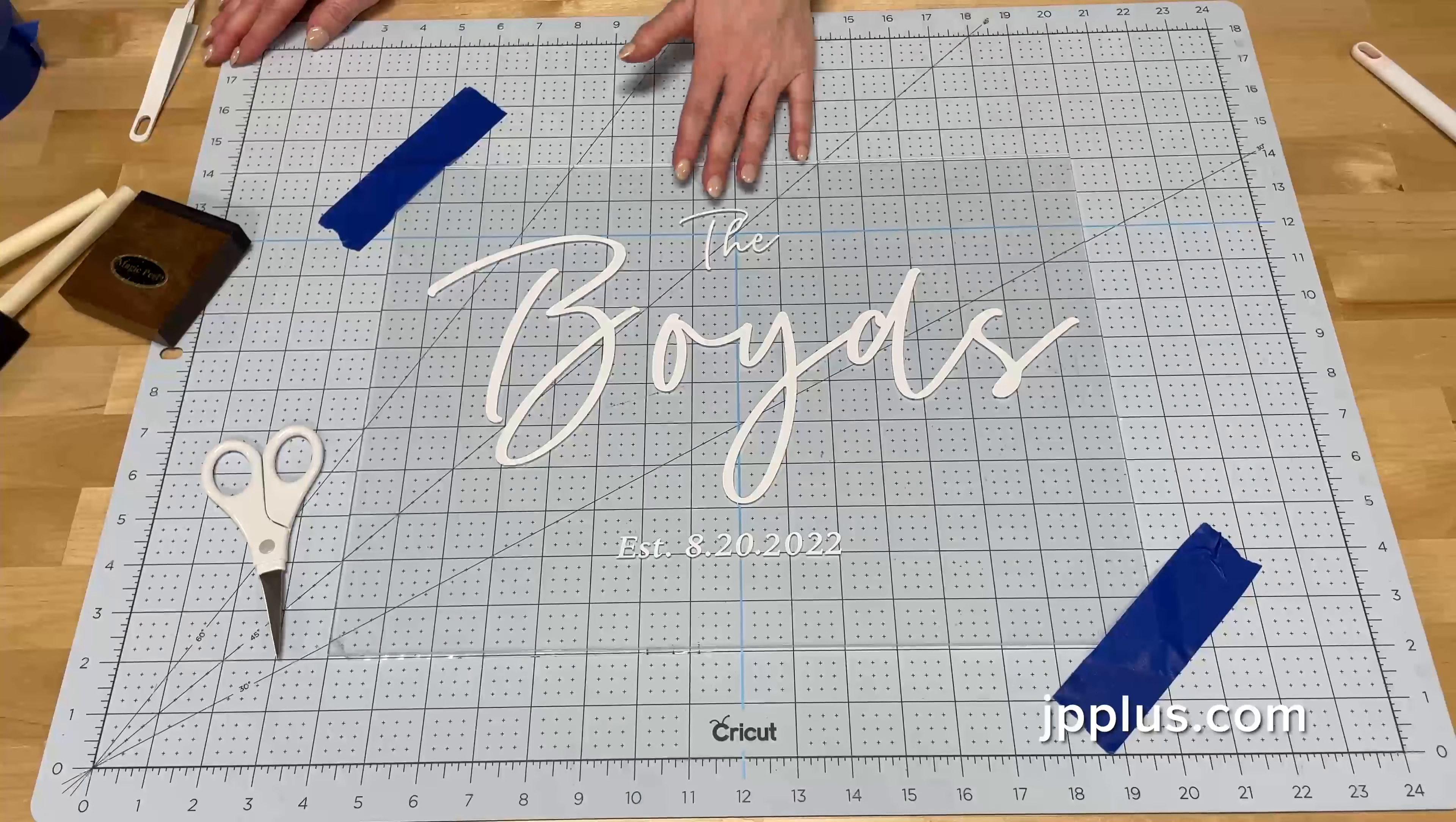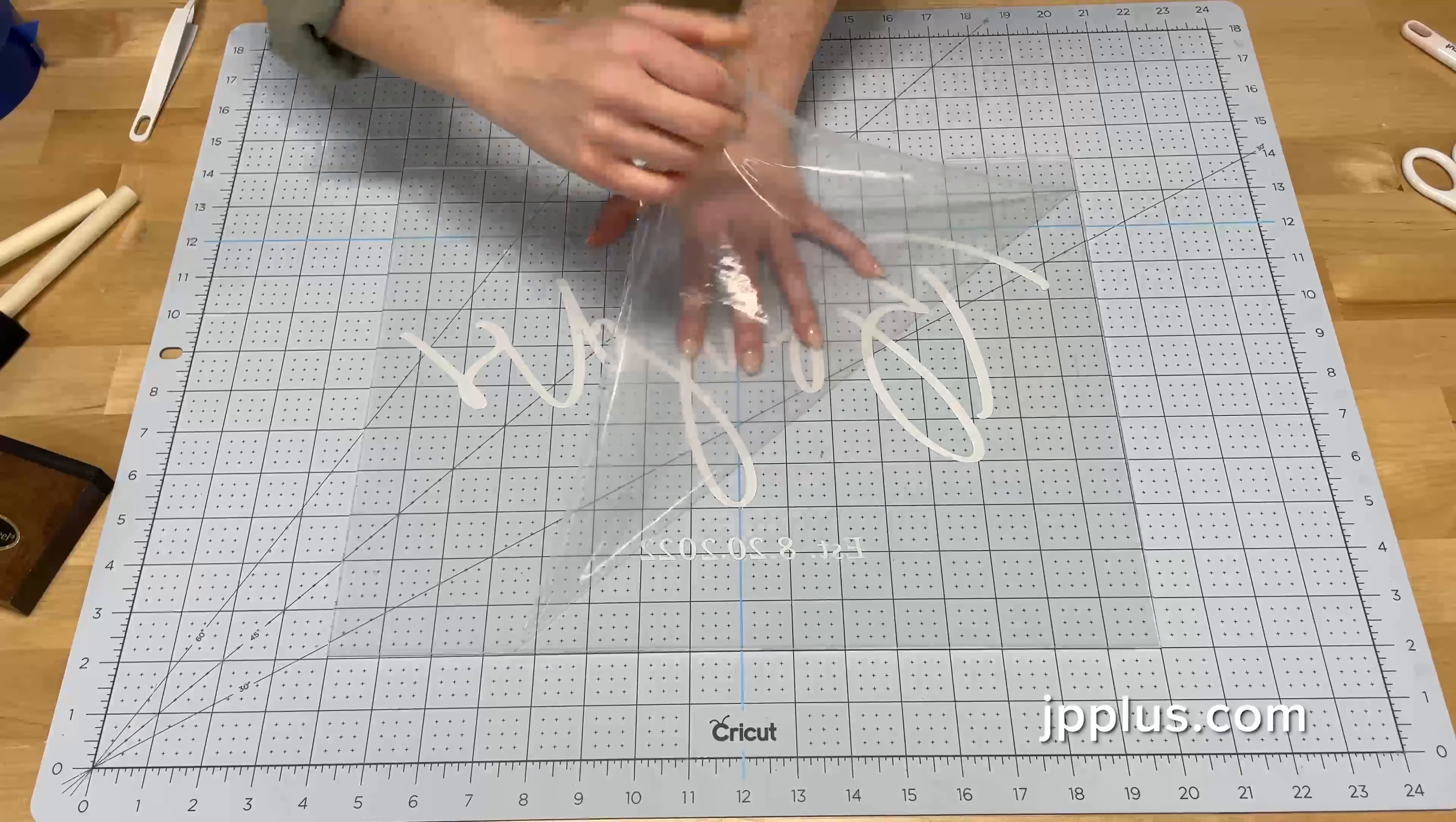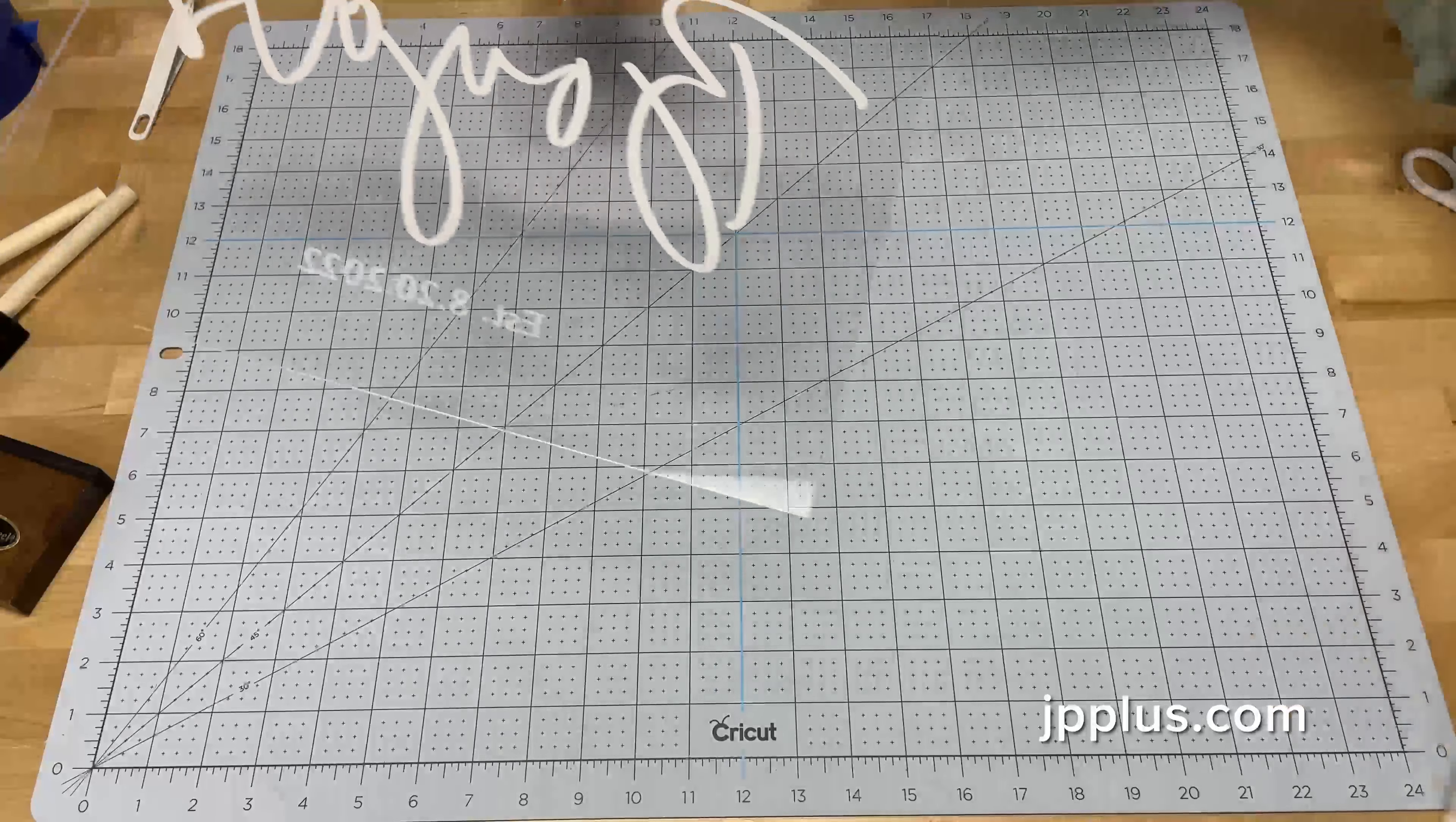So once we've removed the transfer tape, we're ready to start painting the back. So we're going to flip it over and remove the masking from the back just like we did the front. Using my tool here, I'm going to peel the corner a little bit and then pull it up.